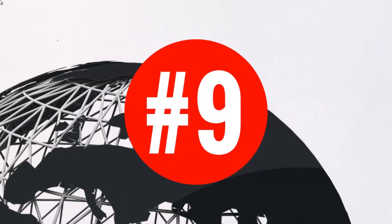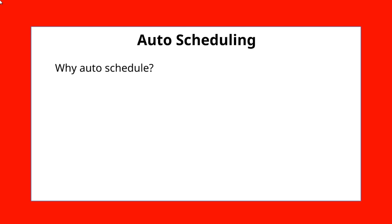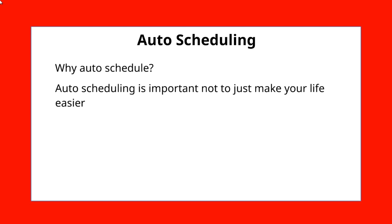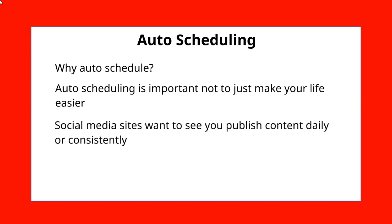Hello and welcome to video number nine. We're going to talk about auto-scheduling your content. Here's why: as you create more and more content using this simplified images method, you can create content at a very fast rate — whether you do it yourself or hire somebody to create 365 days worth of content. Social media sites like Pinterest, Facebook, and Instagram like to see you publish daily or on a consistent basis.